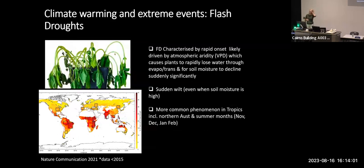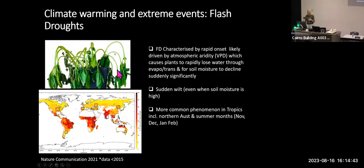Over the last five years, people have been publishing papers on flash droughts, though we think they've probably occurred over decades. A flash drought is characterized by a very rapid onset of drying conditions, likely driven by atmospheric aridity, causing plants to rapidly lose water through evapotranspiration and soil moisture to decline suddenly and significantly - observed as a sudden wilt. I've observed this in Cairns myself, living in the rainforest. In 2019 I remember the whole forest wilting despite adequate soil moisture because it had rained two days earlier.